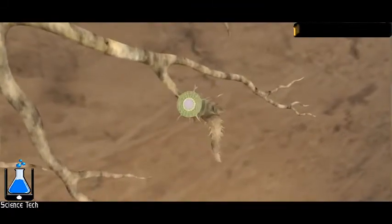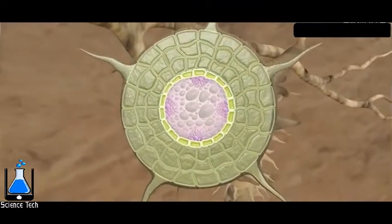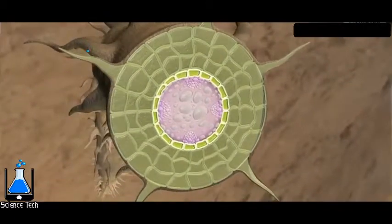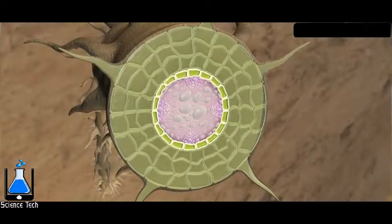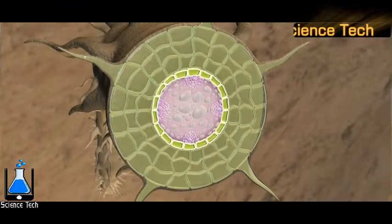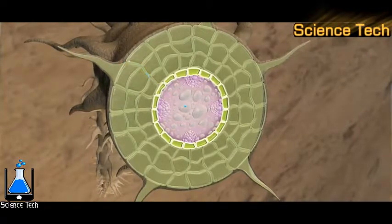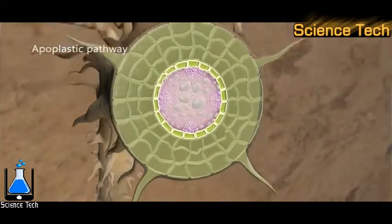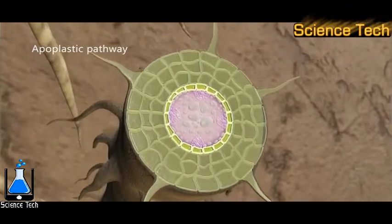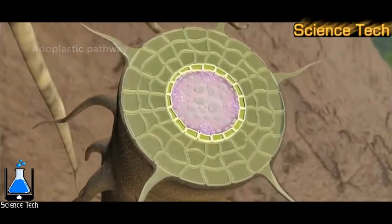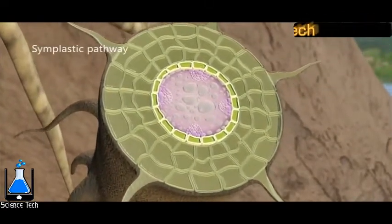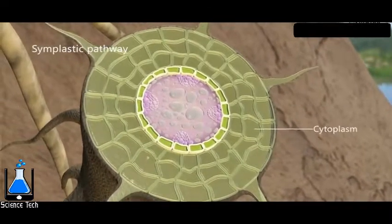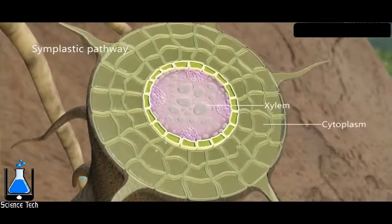Water and minerals enter the root by two pathways: apoplastic pathway and symplastic pathway. If water and minerals move from cell to cell through spaces between the cell walls, then it is known as apoplastic pathway. In symplastic pathway, the water and minerals move across the cytoplasm and finally reach the xylem.